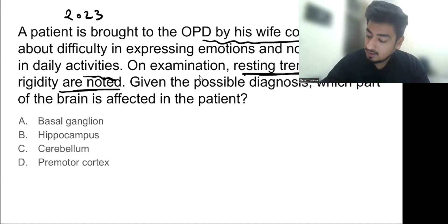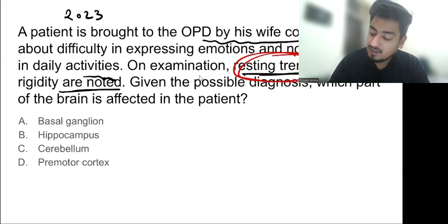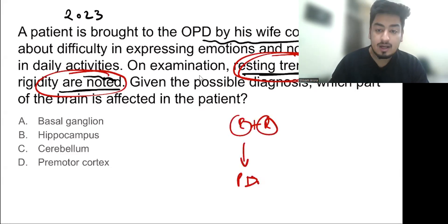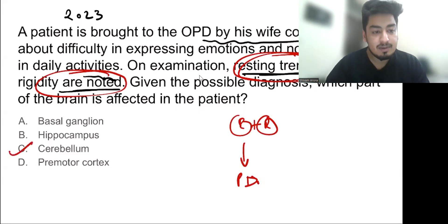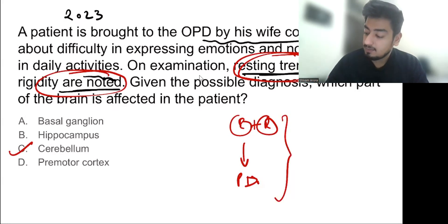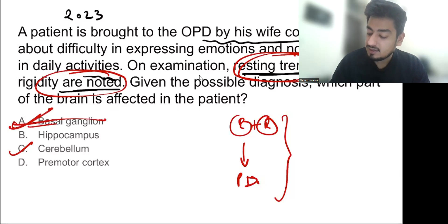The main clues in this question are that the patient is having resting tremors and rigidity. Resting tremors plus rigidity point towards Parkinson's disease. If the patient had intentional tremors, it would point towards cerebellar disease. But since the patient has resting tremors and rigidity, the diagnosis is Parkinson's disease, and the involved organ is basal ganglia, which is the answer.